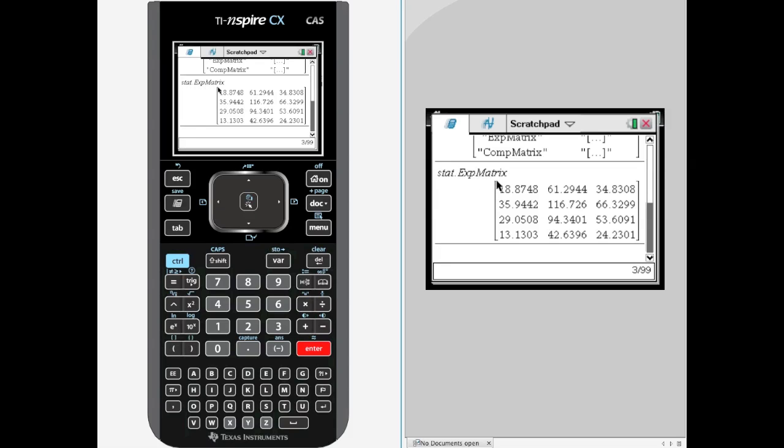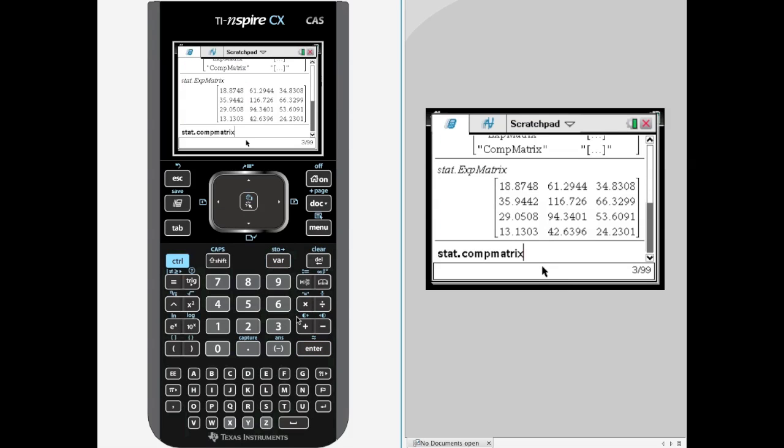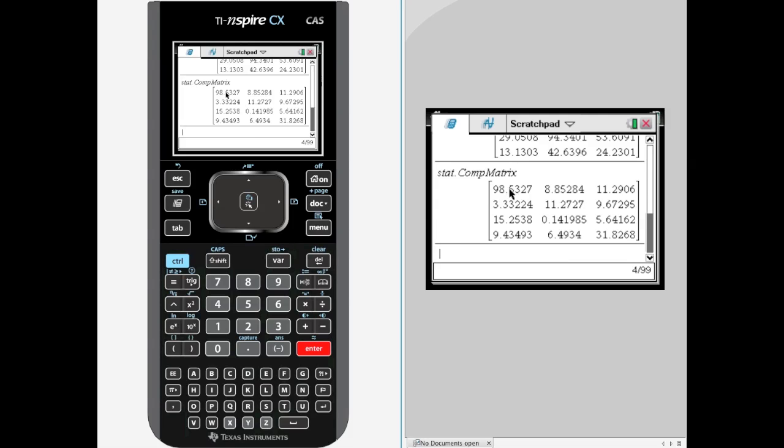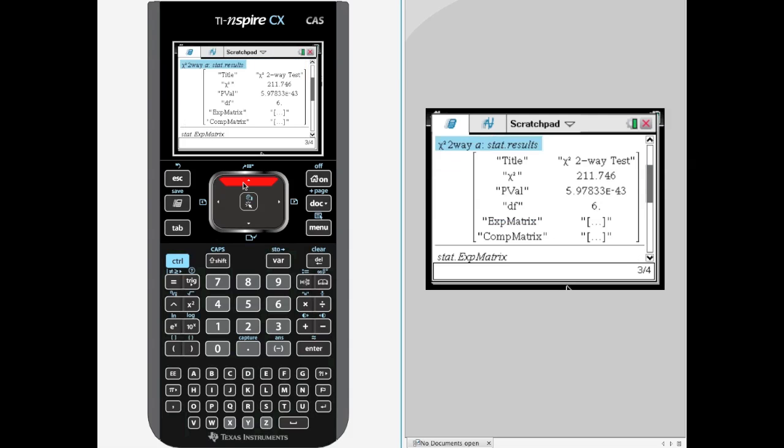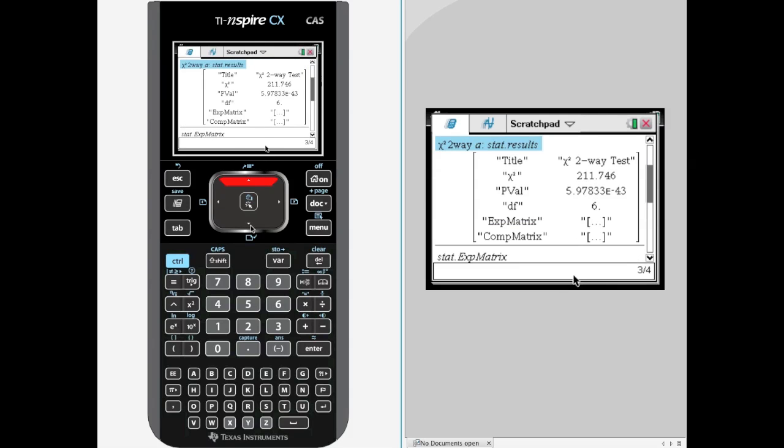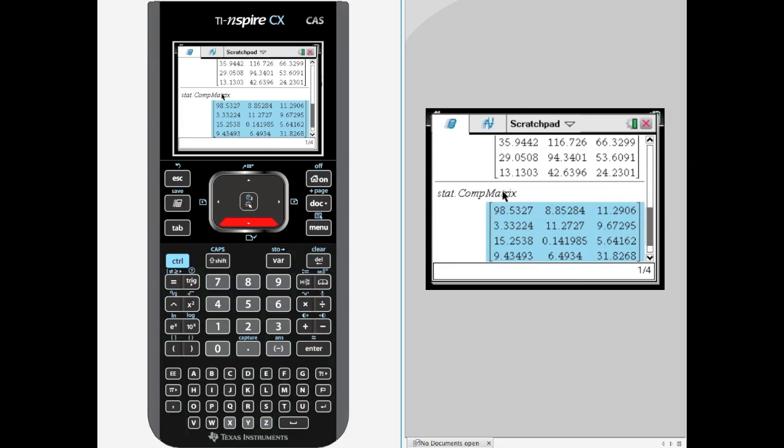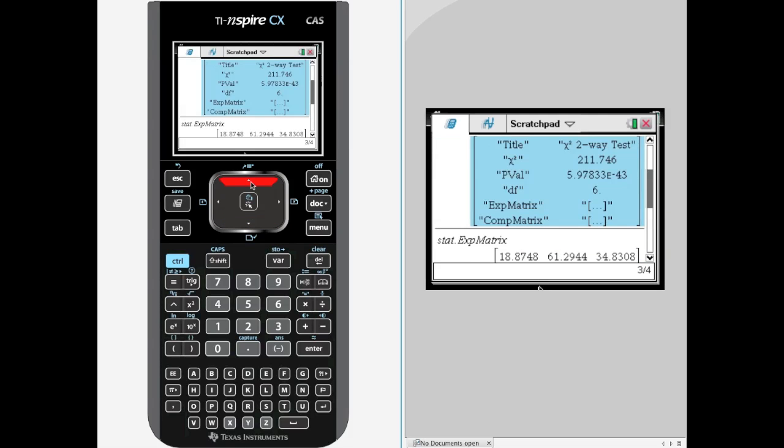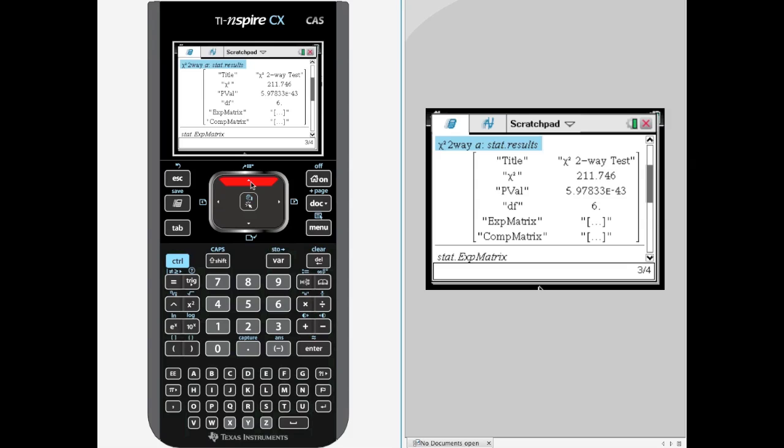But we are going to pull up stat dot exp matrix on the TI-inspire. Now the comp matrix, if you want to see that, you hit vars, go to comp matrix. And what this is, this is the result of doing the observed minus expected squared divided by the expected value. These values, if you add up all 12 of these values, you would get the chi-square statistic, which I believe from memory, because it is off my screen now, was 211. Let's just arrow up and make sure that we have that. Yeah. 211.75. So these values and basically the computed matrix would add up to that chi-square statistic of 211. And that is all there is to running a chi-square statistic test or a chi-square test on your TI-inspire.